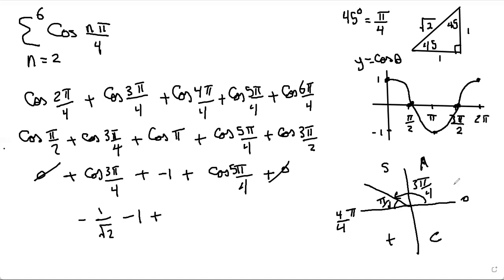Then we have plus cos 5π over 4. 5π over 4 will be in the third quadrant, and the reference angle will also be π over 4. The cos is 1 over √2. Since only tan is positive in the third quadrant, cos is negative. So we have negative 1 over √2.